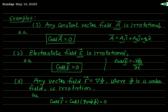Now we consider a very important example: F is a vector field equal to the gradient of a scalar field phi. That is, F equals del phi. If F is defined by the gradient of a scalar field, then this vector field will be irrotational. For F to be irrotational, curl of F must be 0. Here, curl of F equals curl of gradient of phi. By the well-known vector identity, the curl of the gradient of any scalar function is always 0. So curl of grad phi is 0, and therefore curl of F is 0, meaning F is an irrotational vector.